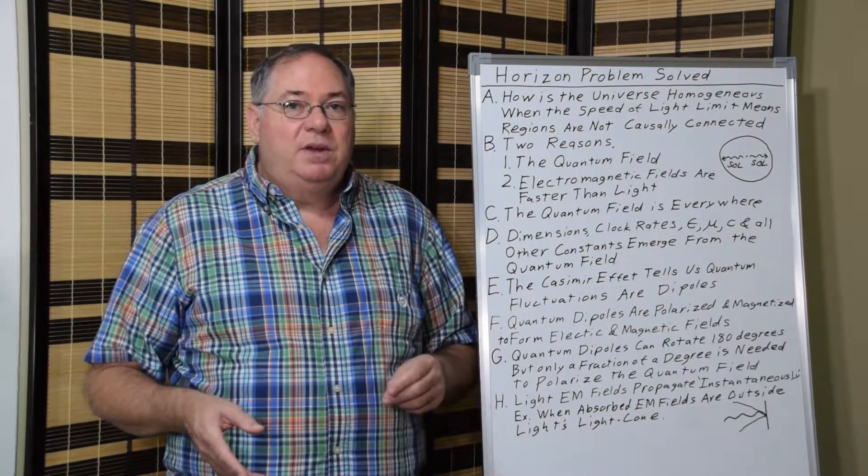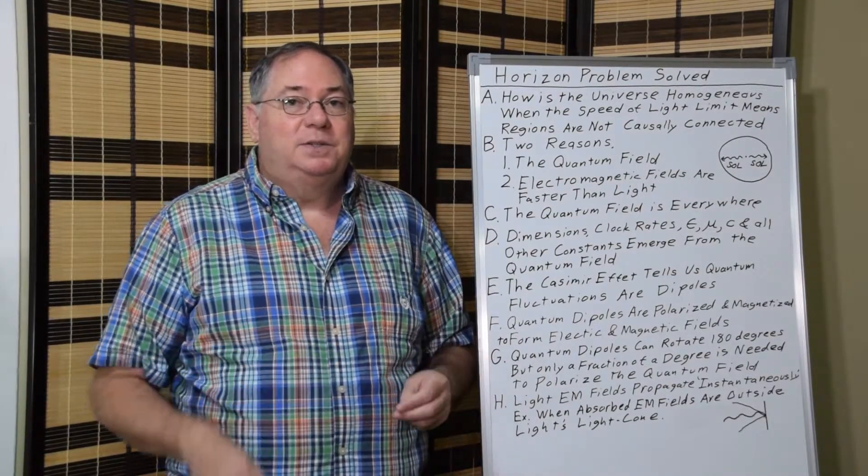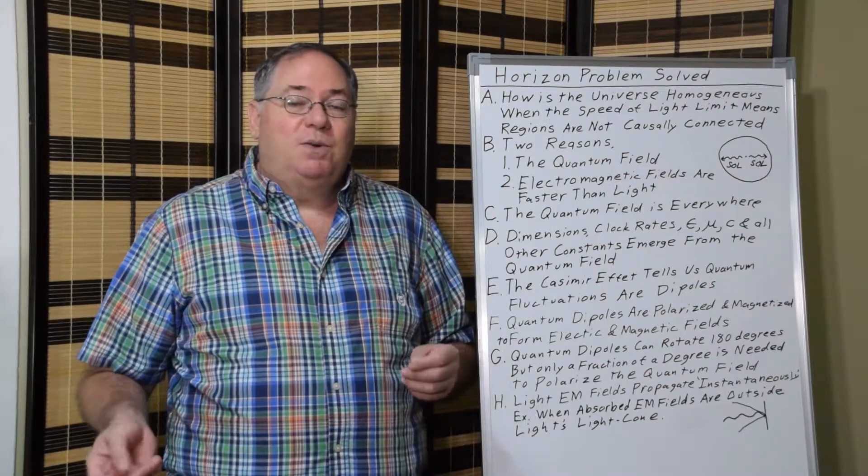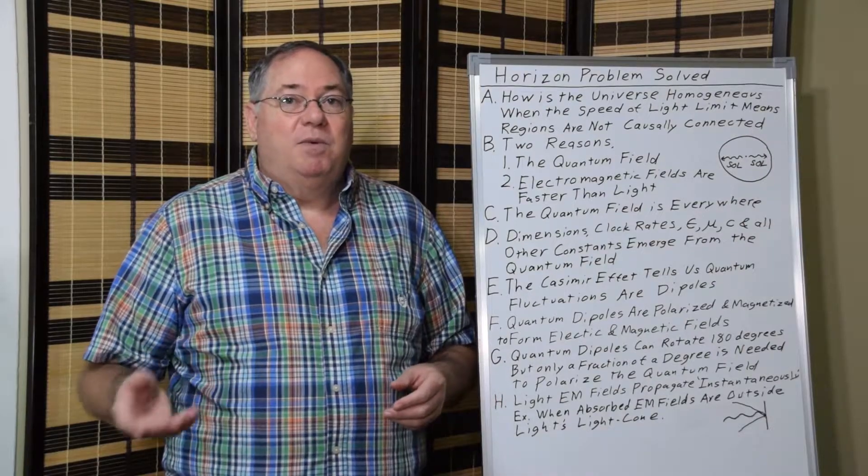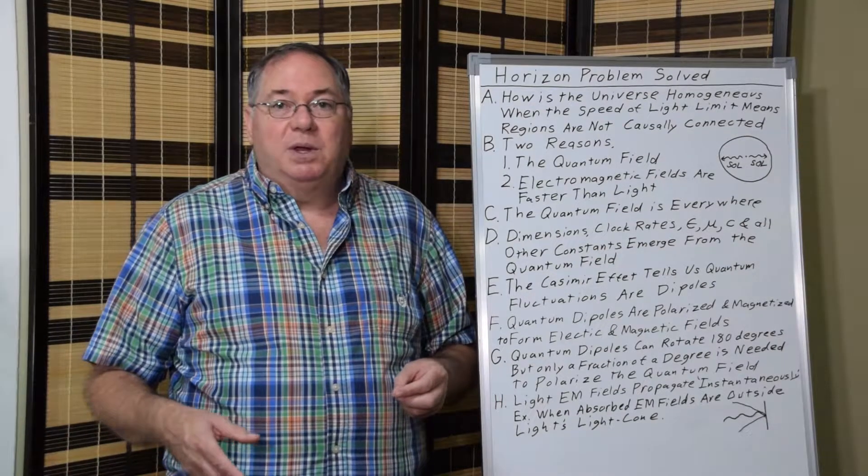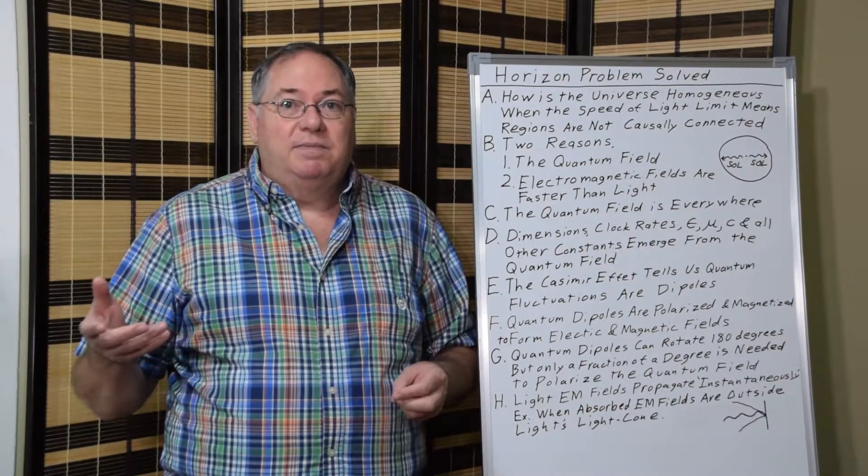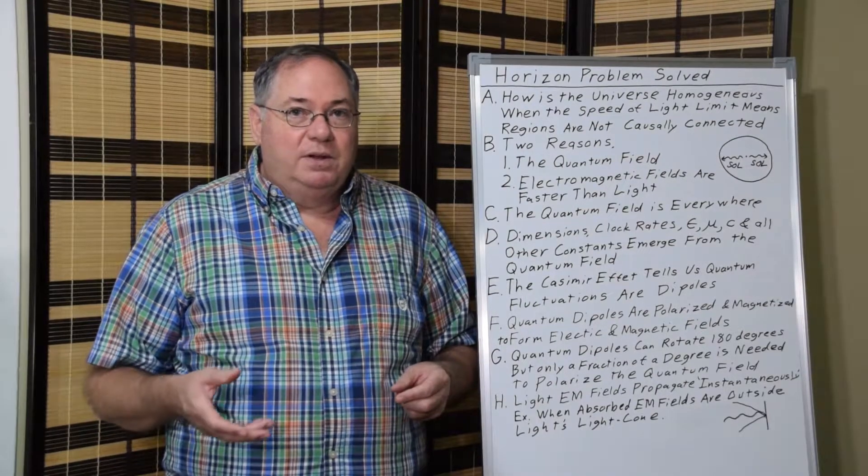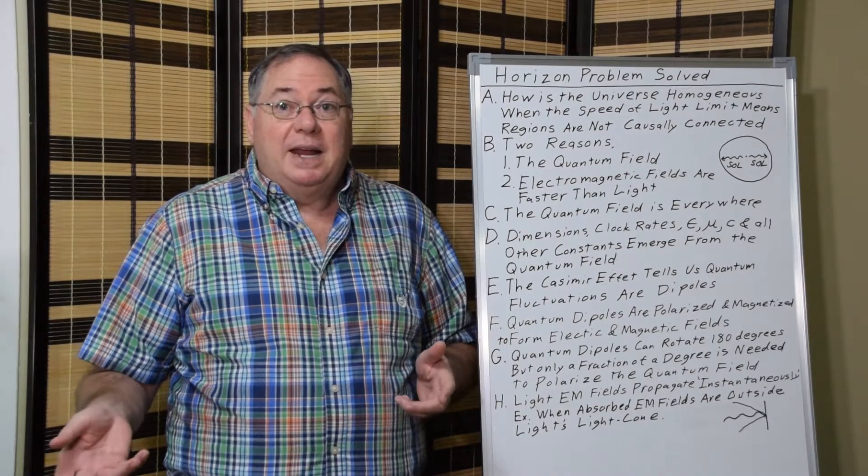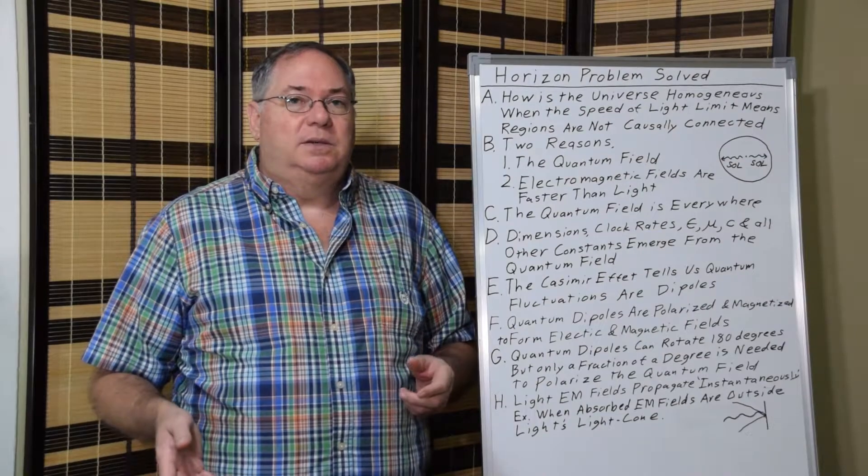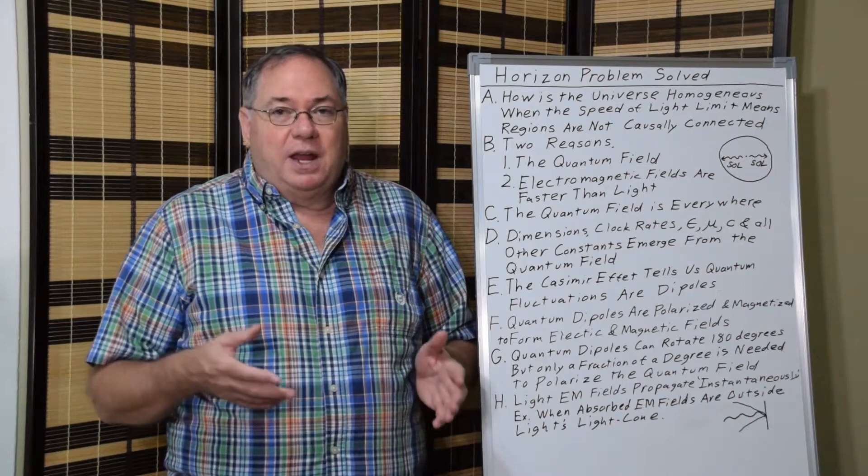But as far as the quantum field goes, whenever there's real space, there's quantum field in the real space. And the quantum field contains quantum fluctuations. And the quantum fluctuations have energy, they have wavelengths, and they have frequencies. Because they have wavelengths and frequencies, they have dimensions, and they have clock rates. So, the quantum field determines the dimensions and the clock rates of space. But it's really the quantum field's dimensions.